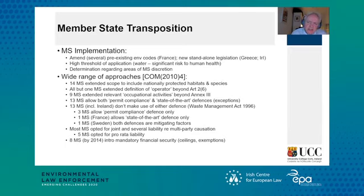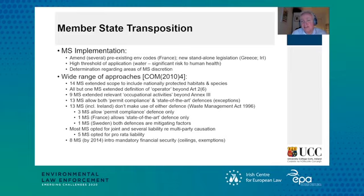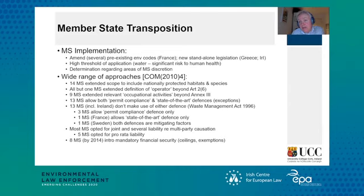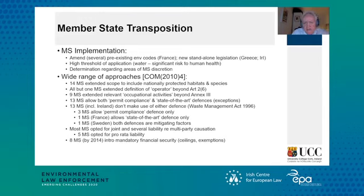If we look at the experience of member state transposition, it has been quite difficult and quite uneven. States have had to take different approaches — including amending often a number of pre-existing environmental codes, for example in the case of France, or introducing new standalone legislation, as in the case of Greece or Ireland. That is complicated by the high thresholds of application: take for example water damage, which requires significant risk to human health — quite a high threshold. How does one superimpose that onto existing environmental codes where there may be a lower threshold? And add to that the complexity of member states having to determine how to handle the various areas of member state discretion.